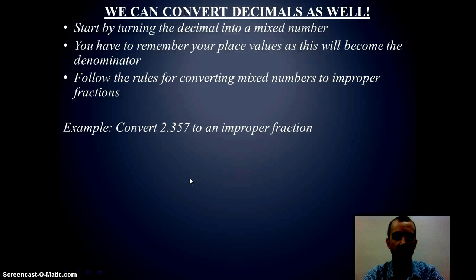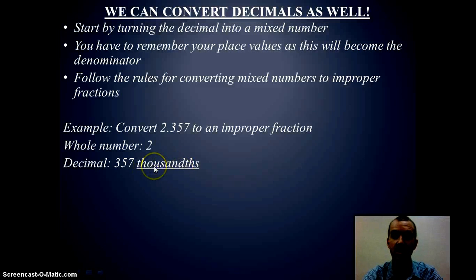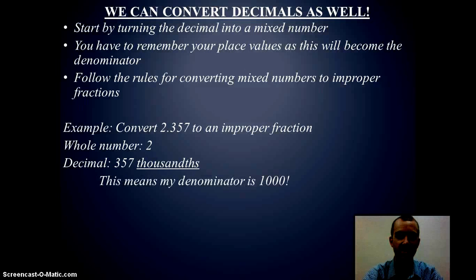So let's look at what we have here: two and three hundred fifty-seven thousandths to an improper fraction. First thing we want to recognize, the whole number is two. The decimal is three hundred fifty-seven thousandths. So that means we're going to take three hundred fifty-seven and put it over one thousand.